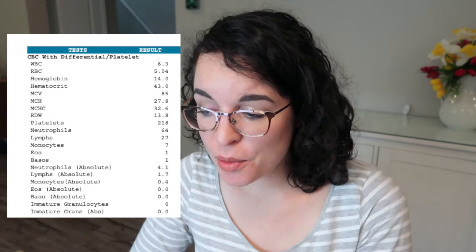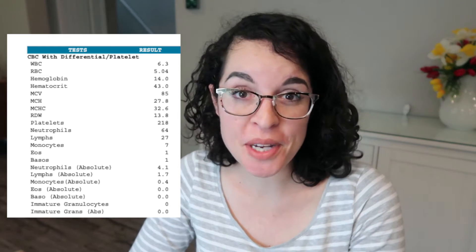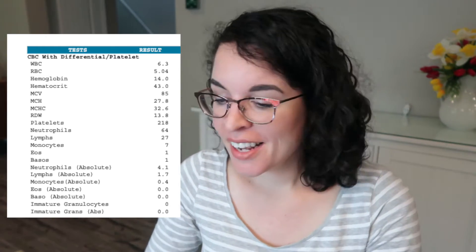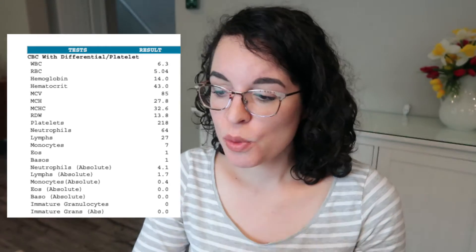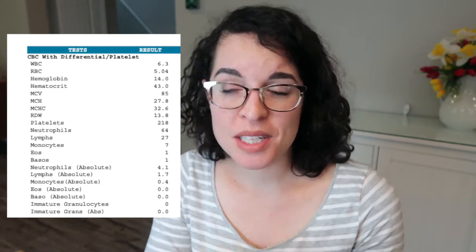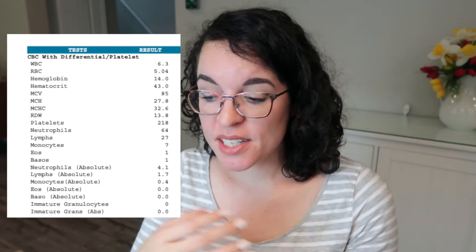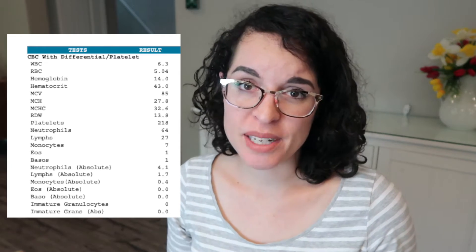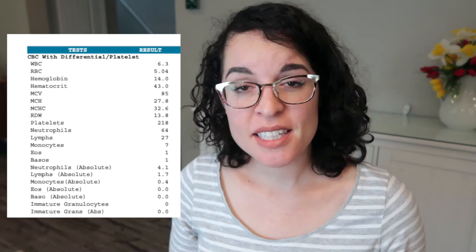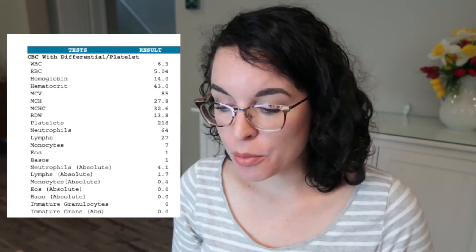So let's go over your lab work — this is just a brief overview, feel free to stop me with any questions. The first thing we look at is the CBC with differential and platelets — that's your complete blood count. Your white blood cells fight infection, your red blood cells carry oxygen throughout your body. With everything on this list, we want you to have enough but not too many — be in the sweet spot. Your platelets are what clot your blood so you don't bleed out from a paper cut. The rest are just different types of white blood cells, and since none are abnormal, we won't go into those.